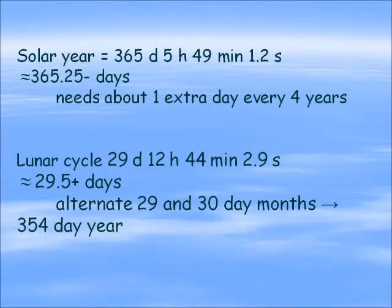A lunar cycle is 29 days, 12 hours, 44 minutes, and 2.9 seconds — a little more than 29 and a half days. So if you take your months and alternate them, one month of 29 days and one month of 30 days, you will come out to a 354-day year. You can see right away that that's going to be short by 11 days of a solar year.